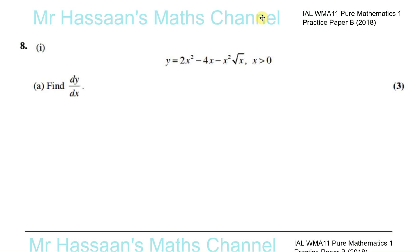Question number 8 from P1, Practice Paper B, International A Level — a question about differentiation.